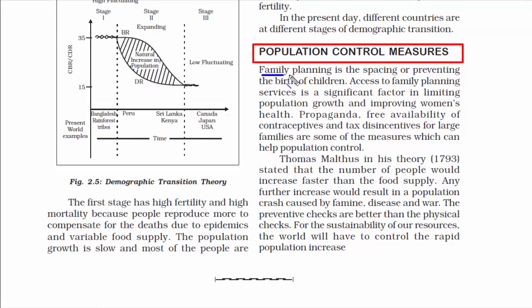The last topic of this chapter is population control measures. Some of the measures in use are family planning services, availability of contraceptives, and government tax disincentives — imposing extra taxes or fees to control undesirable behaviors. For example, the Singapore government imposes disincentives like limiting income tax relief to the first three children, allowing paid maternity leave only for the first two pregnancies, and increasing the cost of giving birth to a third child. Singapore also gives children from smaller families priority in school admission.